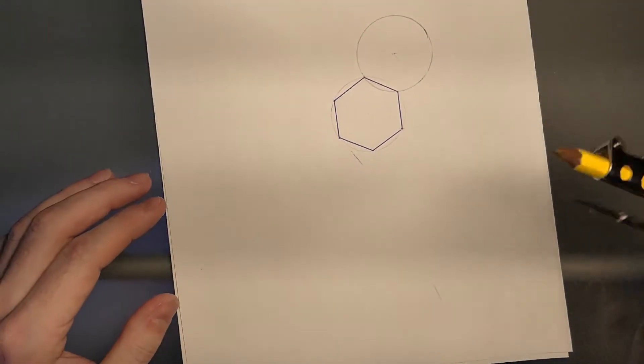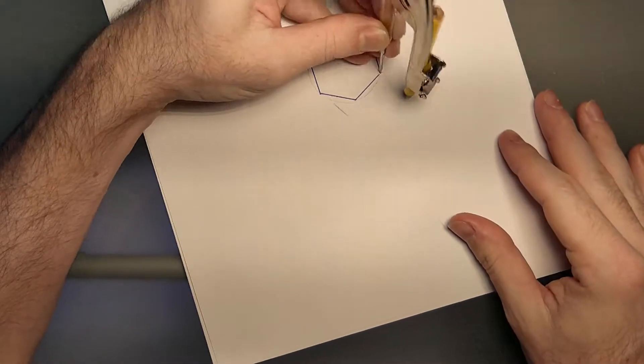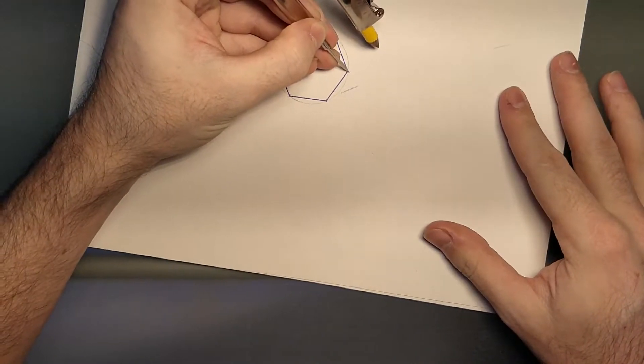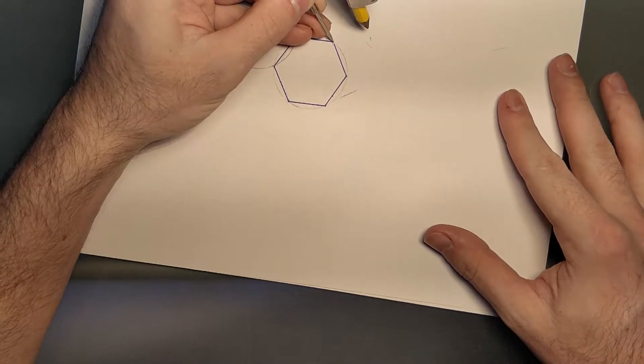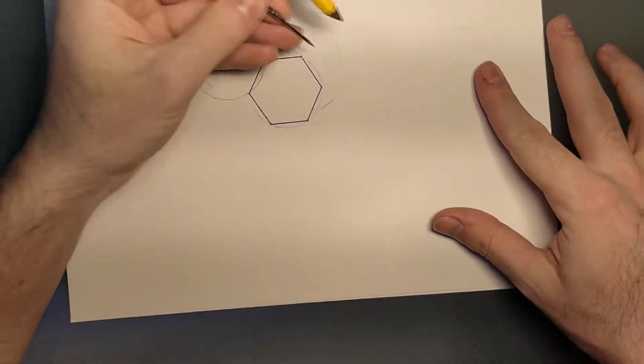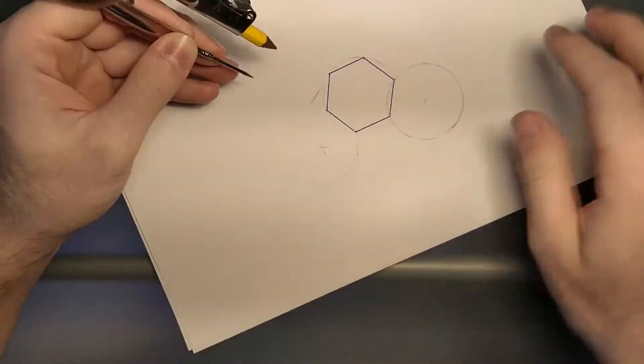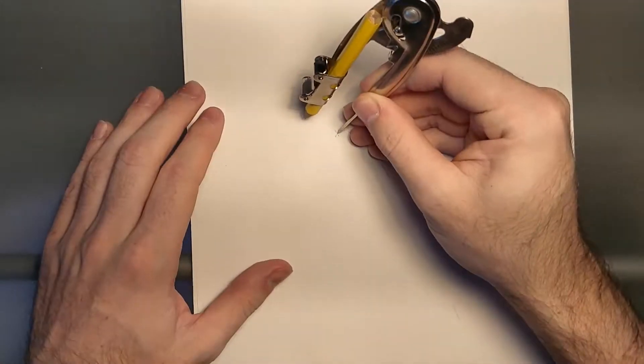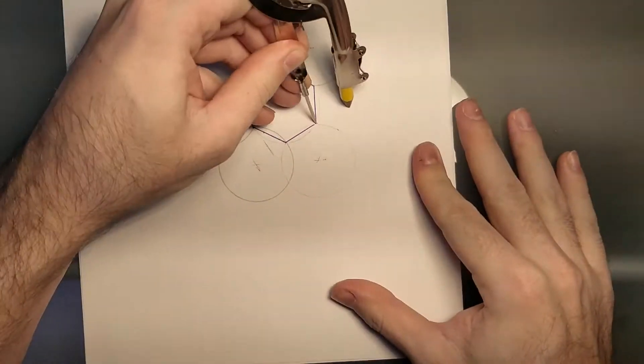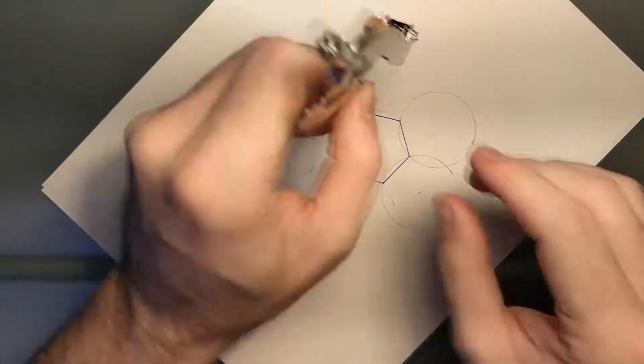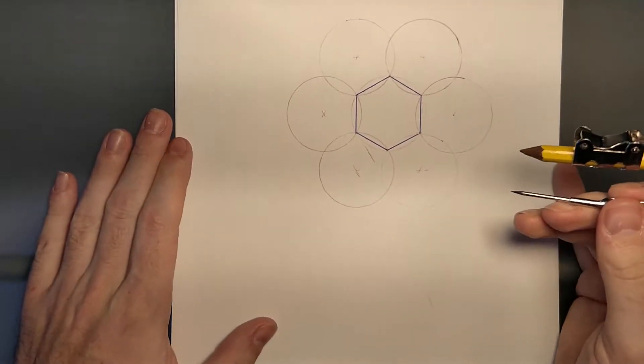We're going to do the same thing for each one. We're just going to go back and forth finding our centers. Now that we've found all these centers, what we're going to do is find the vertices of each of the hexagons.